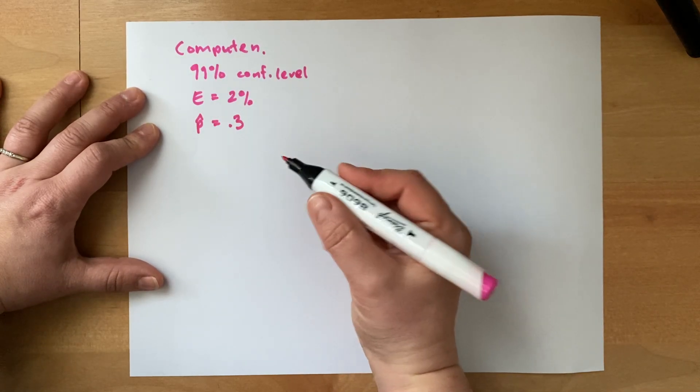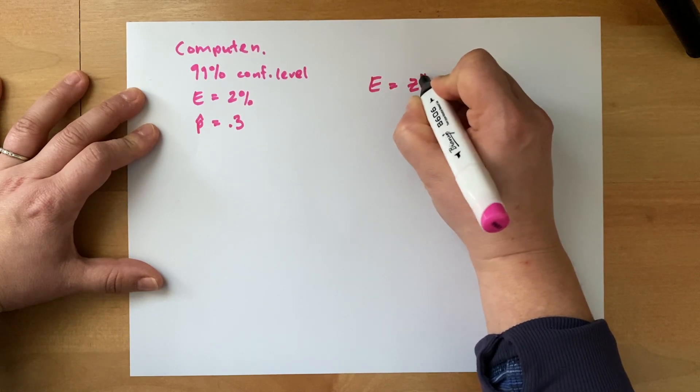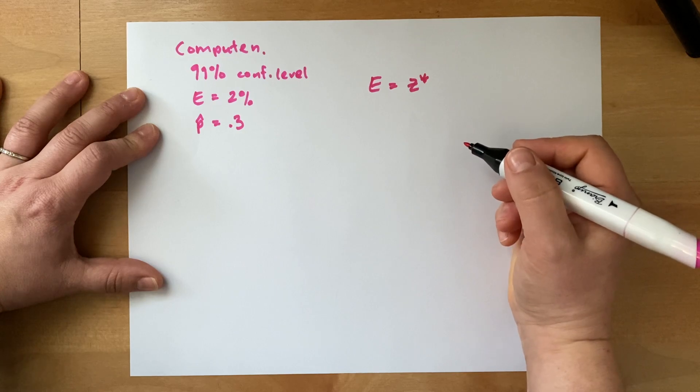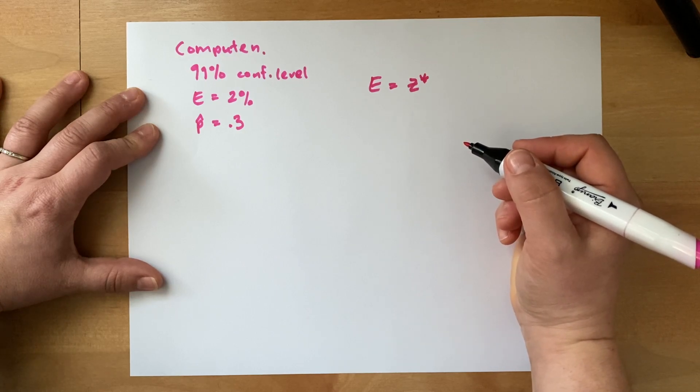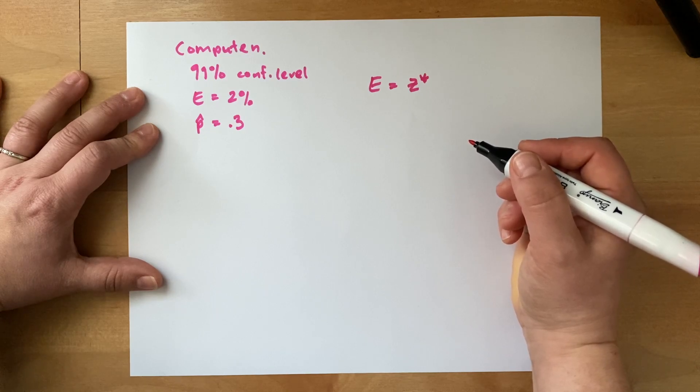So we're going to use our margin of error formula. So margin of error is equal to a z star, and this is all for proportion. Formulas for estimating sample sizes for averages or standard deviations, they have different formulas.